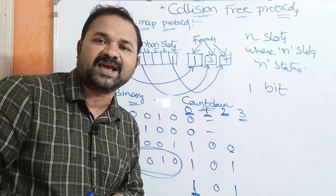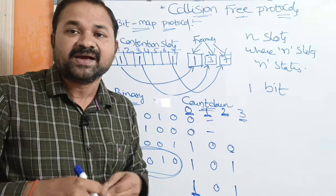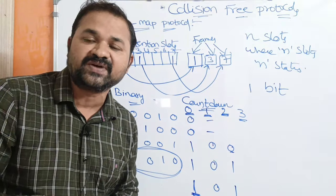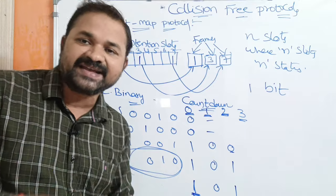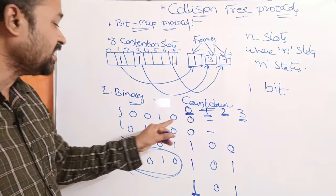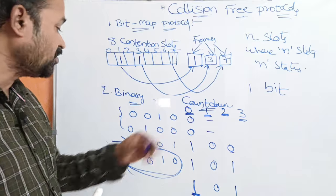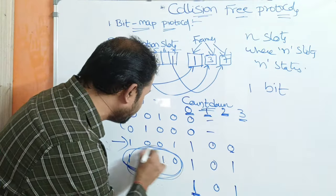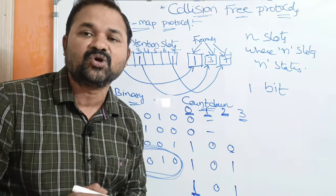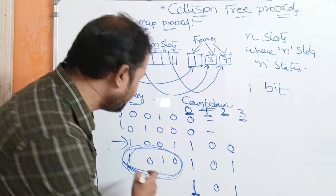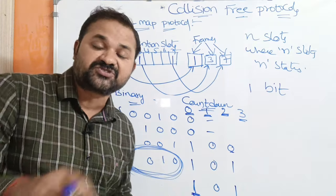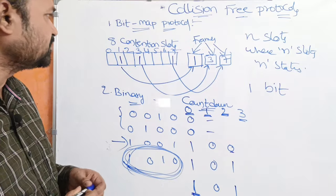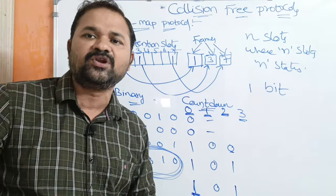In binary countdown, the higher-order number has the higher priority. For example, 1010 in decimal is 10, which has higher priority than 9 (1001), 4 (0100), and 2 (0010). So station 1010 transmits the frame first, followed by 1001, then 0100, then 0010. This is the binary countdown protocol and concludes our discussion of collision-free protocols.